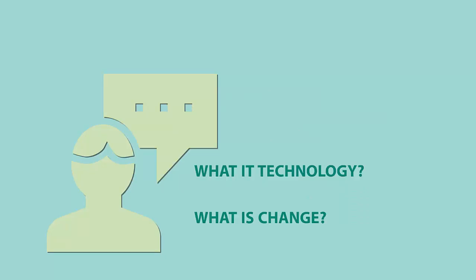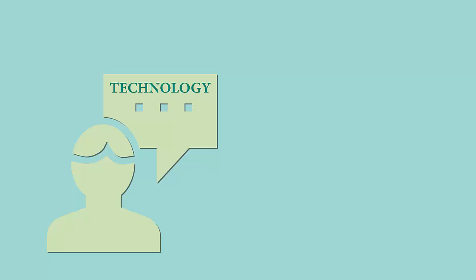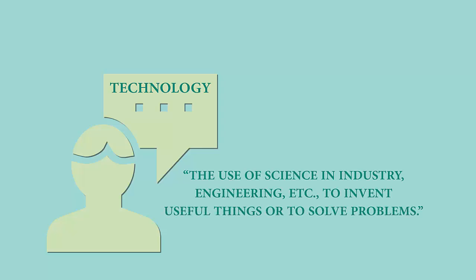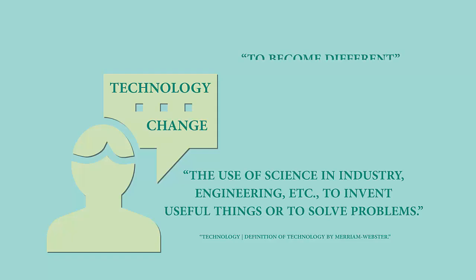Let's start with technology. For this course, let's use this definition of technology: the use of science in industry, engineering, etc., to invent useful things or to solve problems. And how about change? Let's go with this definition for change: to become different. Okay, these definitions appear simple enough, but I don't know that these two definitions will be enough to help me assess the questions raised by my vacation experience.